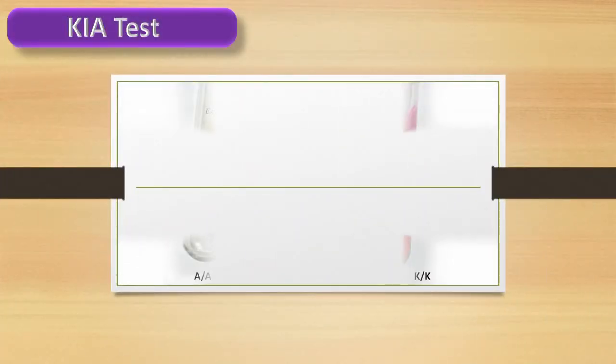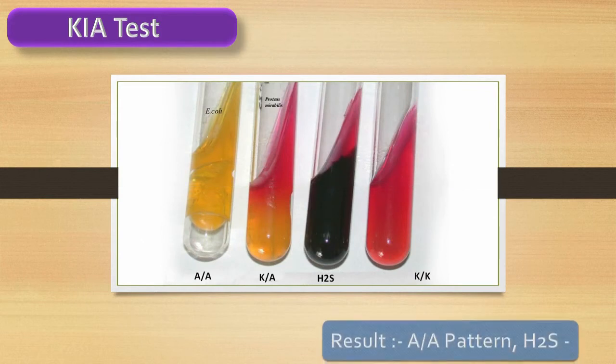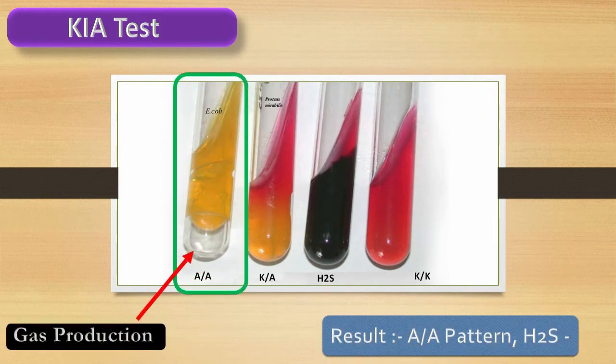Kligler Iron Agar (KIA) test: we can see the whole tube change into yellow color and gas production.